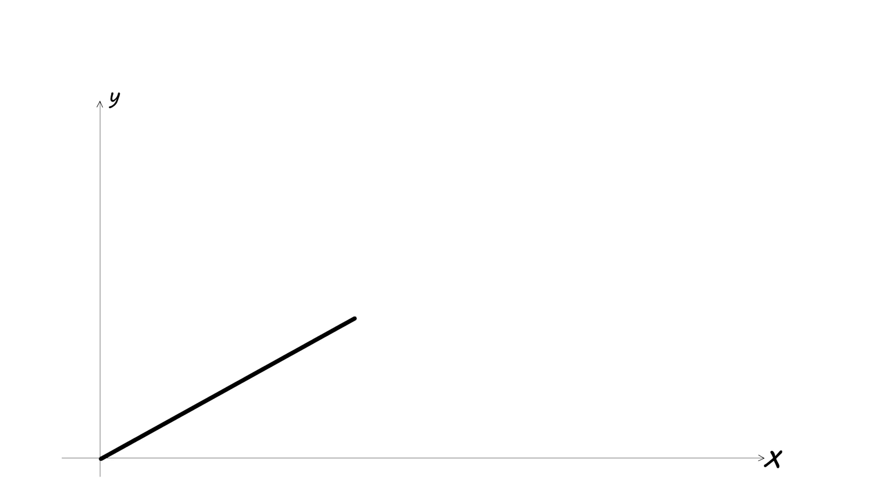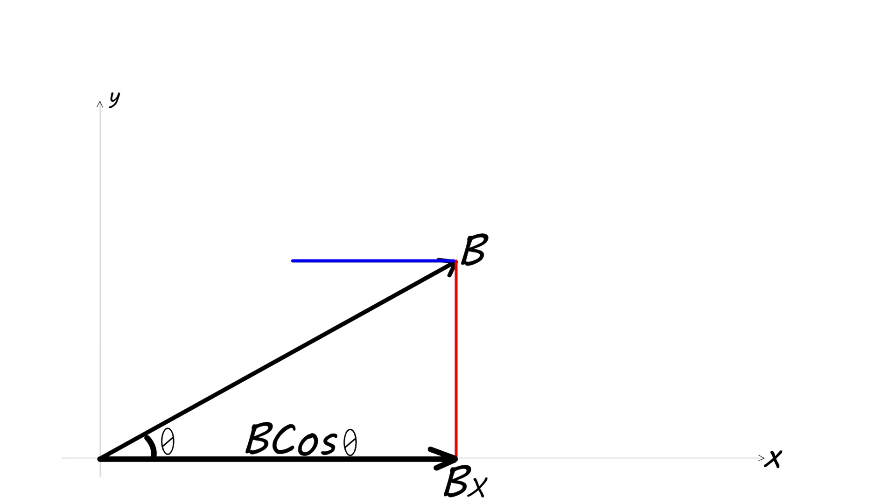To find the x component for a vector, draw a perpendicular line from the head of the vector to the x-axis. The vector's x component then will equal the vector magnitude multiplied by the cosine of the angle between the vector and the x-axis. To find the y component for the vector, draw a perpendicular line from the head of the vector to the y-axis. The vector's y component will be equal to the vector magnitude multiplied by the sine of the angle between the vector and the x-axis.